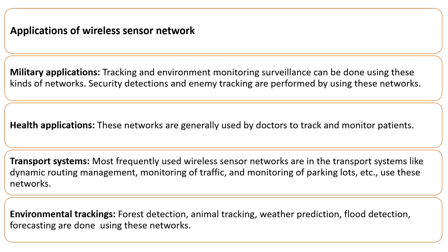Environmental tracking applications include forest detection, animal tracking, weather prediction, flood detection, and forecasting using these kinds of networks. This is all about WSNs and wireless sensor networks. Subscribe to the channel if you found this helpful. Like and share with your friends.